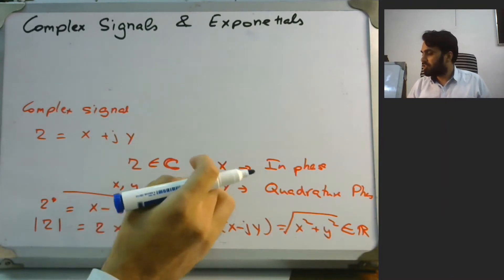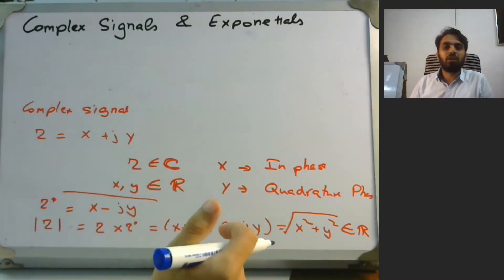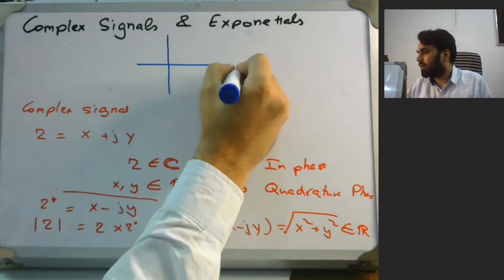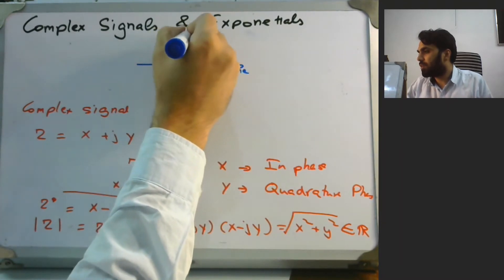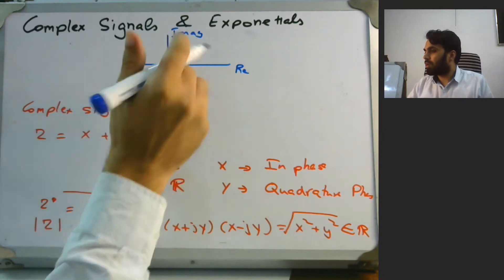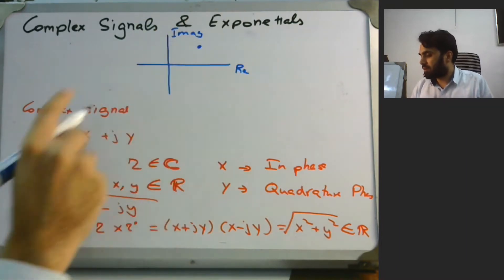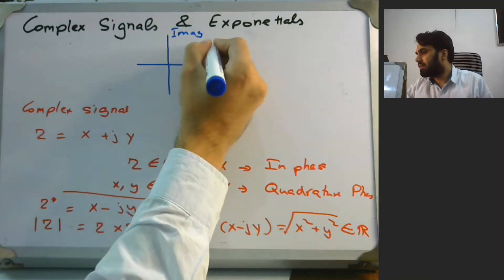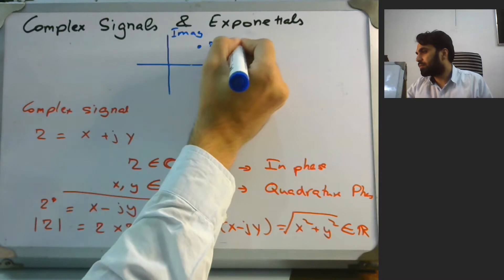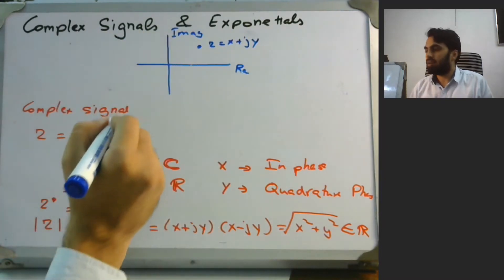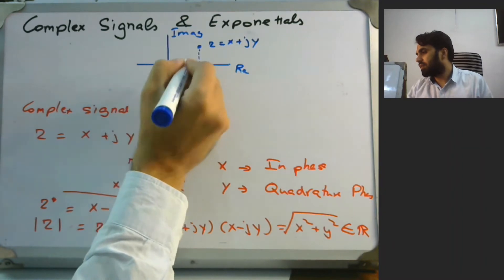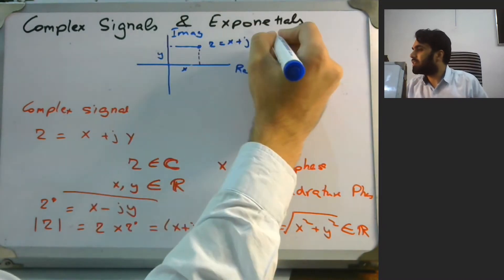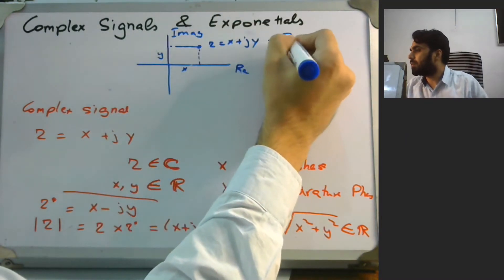Since x and y are the in-phase and quadrature phase components respectively, we can draw a plot with the real part on one axis and the imaginary part on the other. In this plot, z is represented as x plus j y, where x is the real component and y is the imaginary component. This type of representation is called a rectangular representation.